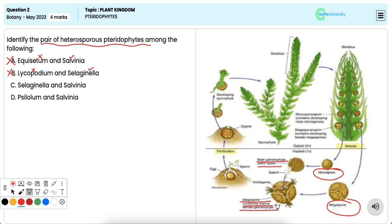Microspores typically develop into male gametophytes producing sperm, while megaspores develop into female gametophytes giving rise to eggs. Hence it is the correct answer.